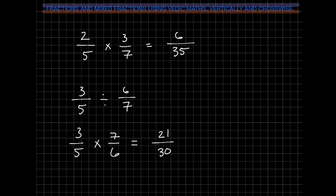Now we could reduce this even further. We could divide both of these by 3. So 21 divided by 3 is 7, and 30 divided by 3 is 10. So we get our answer as 7 over 10.